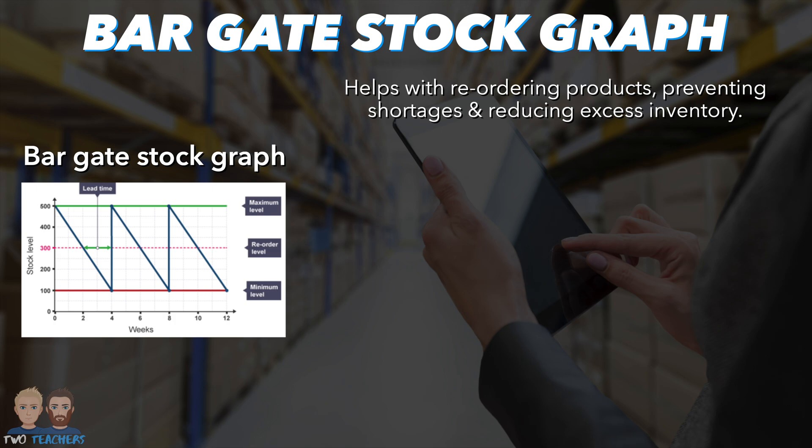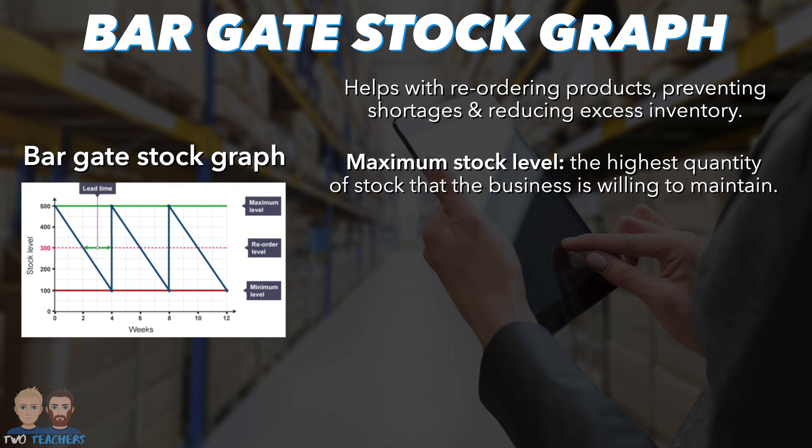The first is Maximum Stock Level. This represents the highest quantity of stock that the business is willing to maintain. If we were talking about a car dealership, this would be 500 cars.